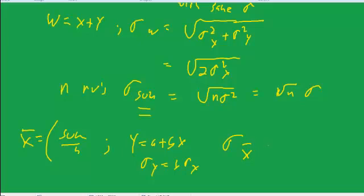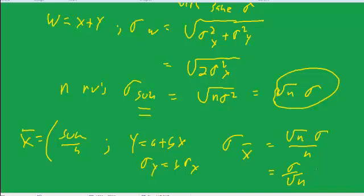The sigma of x-bar equals the sigma of the sum divided by n, which equals sigma over the square root of n. And that's where the square root of n comes from.